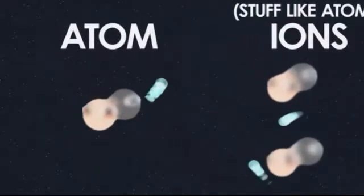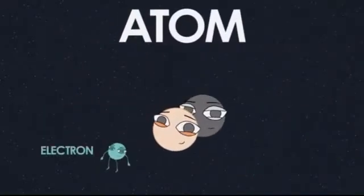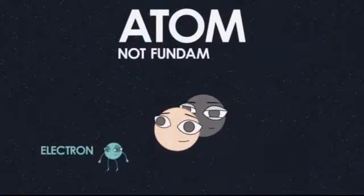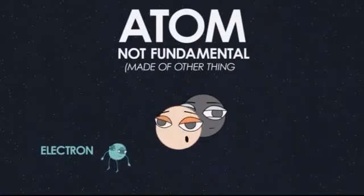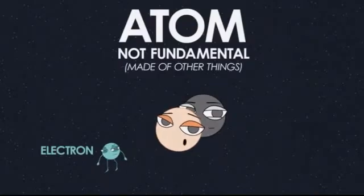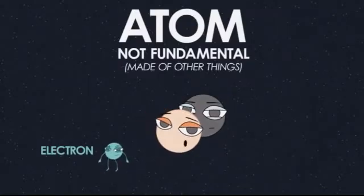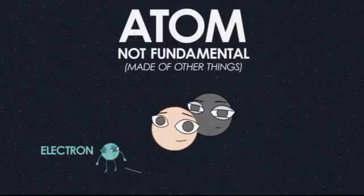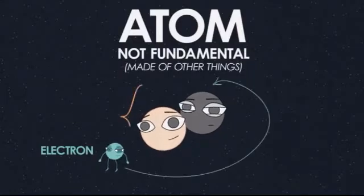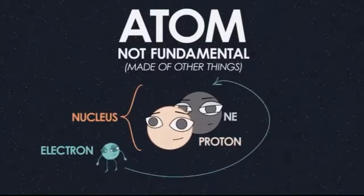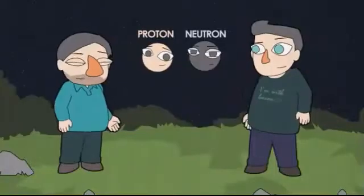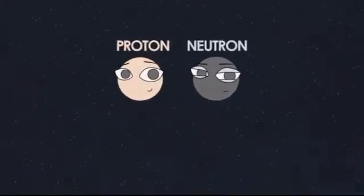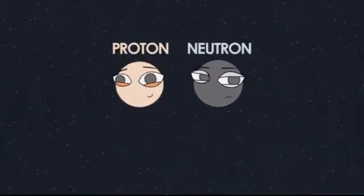So hang on — atoms contain electrons, so you can actually cut an atom up into something smaller? Atoms are not fundamental; they're made of other things. So what are they made of? Atoms are made of electrons which go around a nucleus, and the nucleus is made of protons and neutrons. So are protons and neutrons fundamental? No, protons and neutrons are not fundamental — they're made of quarks.